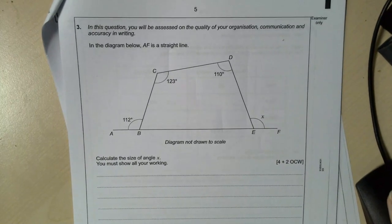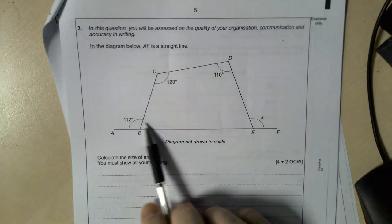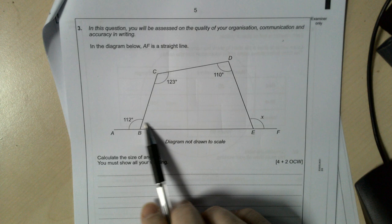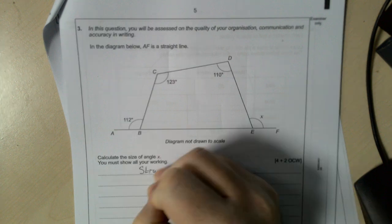Question three is an angle question and you've got various shapes in the straight line here and angles on the straight line add up to 180 degrees.